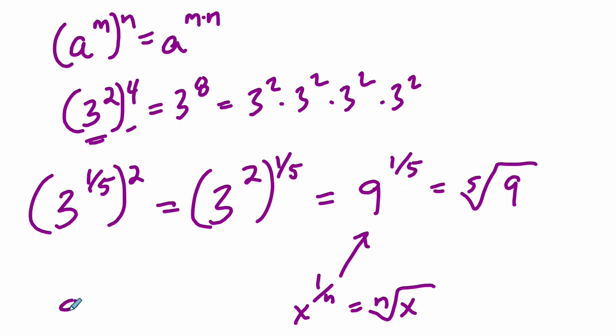An example that might be easier to process might be something like 8 to the 1/3. That would be the 3rd root of 8, which is 2, because 2 multiplied 3 times is 8.